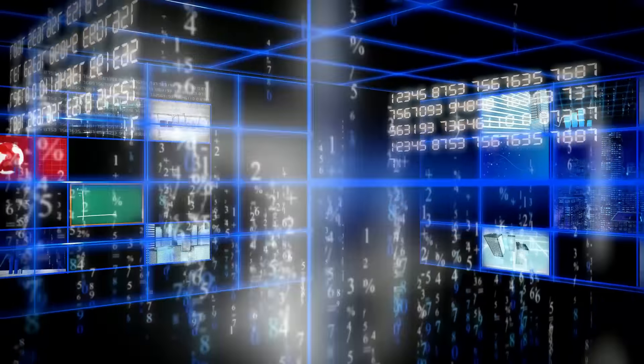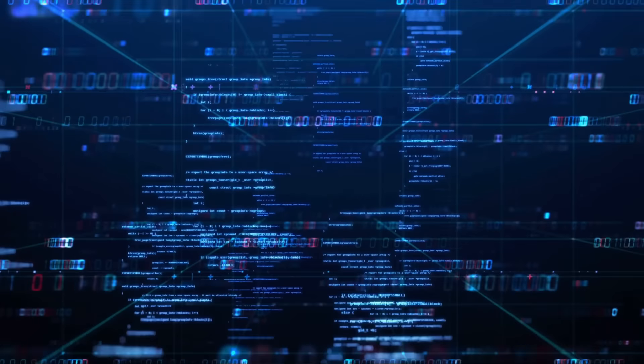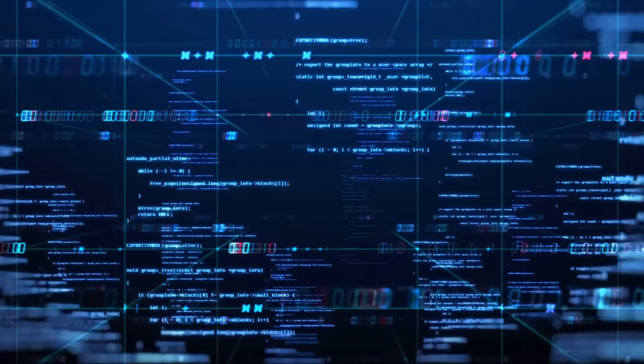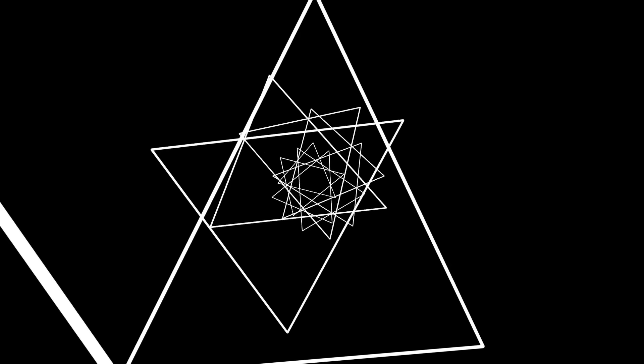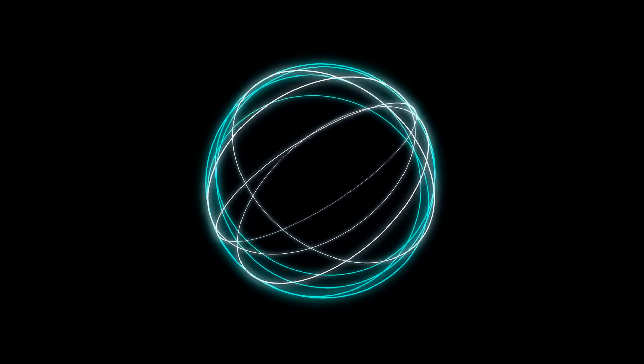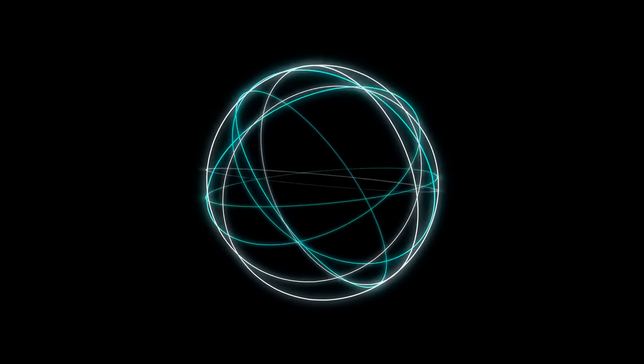That's where mathematics comes in. Mathematics is the language of the universe, and patterns are its alphabet. One of the mathematical principles that help us understand these cosmic patterns is fractal geometry. Fractals are patterns that repeat at every scale. Look at a snowflake, a coastline, a tree branch, or a cloud, and you'll see fractals. The same principle applies to the cosmic web. Its structure is fractal-like, repeating its patterns at different scales.